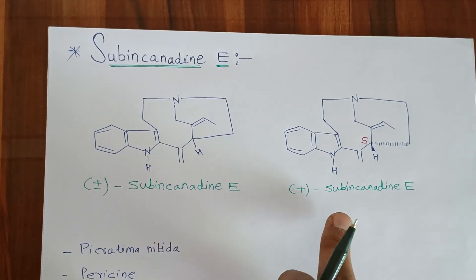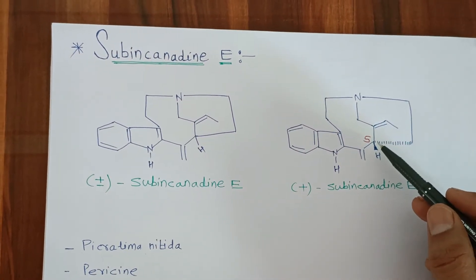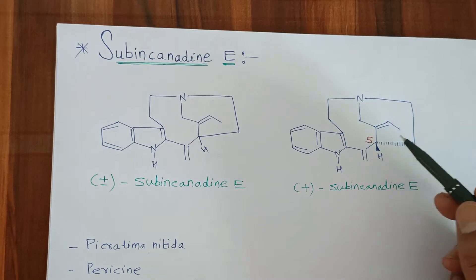In case of (+)-Subincanadine E, the chiral carbon has S configuration.